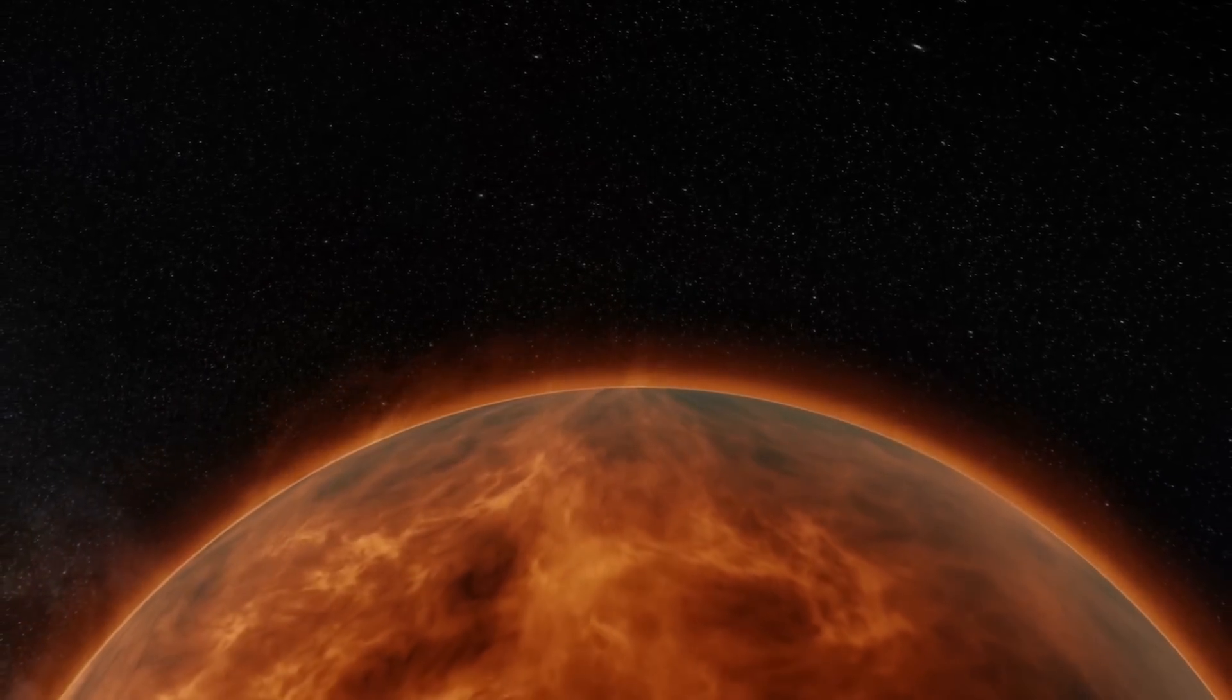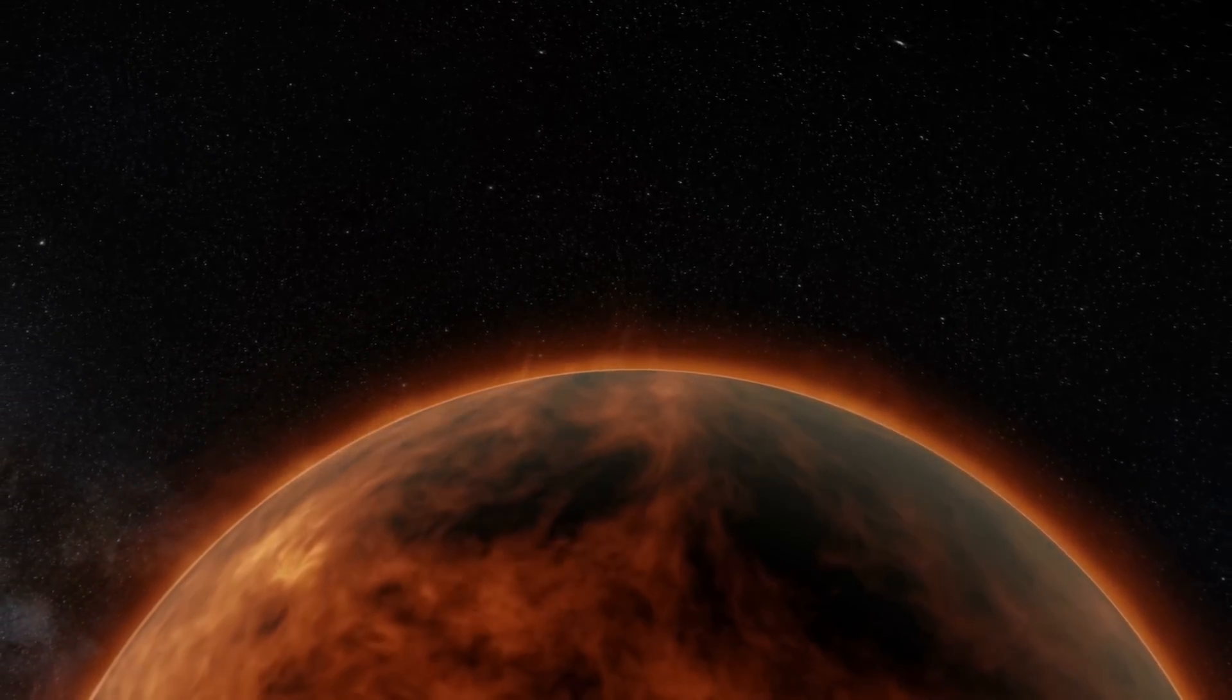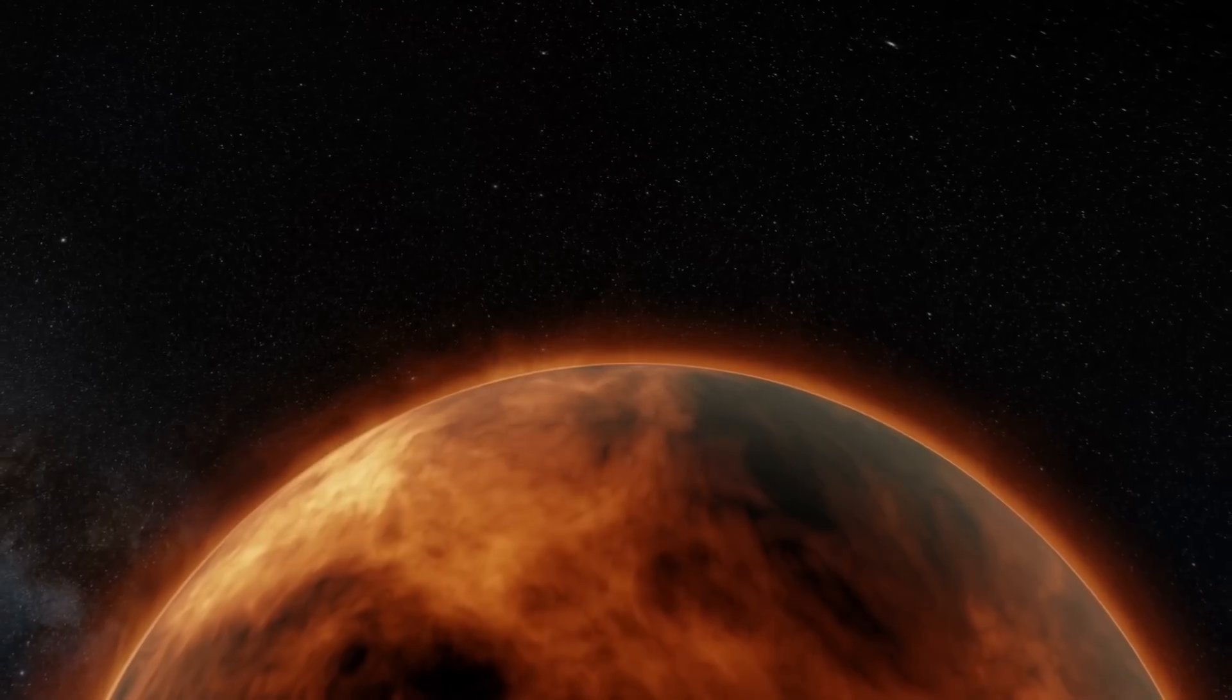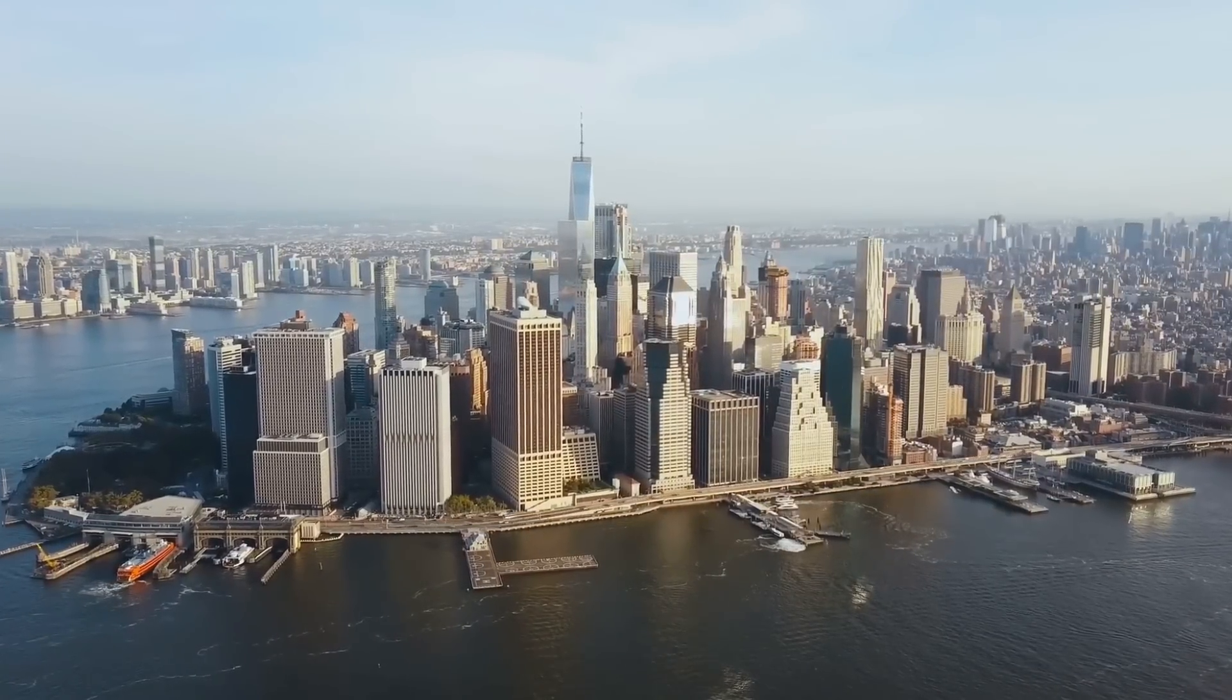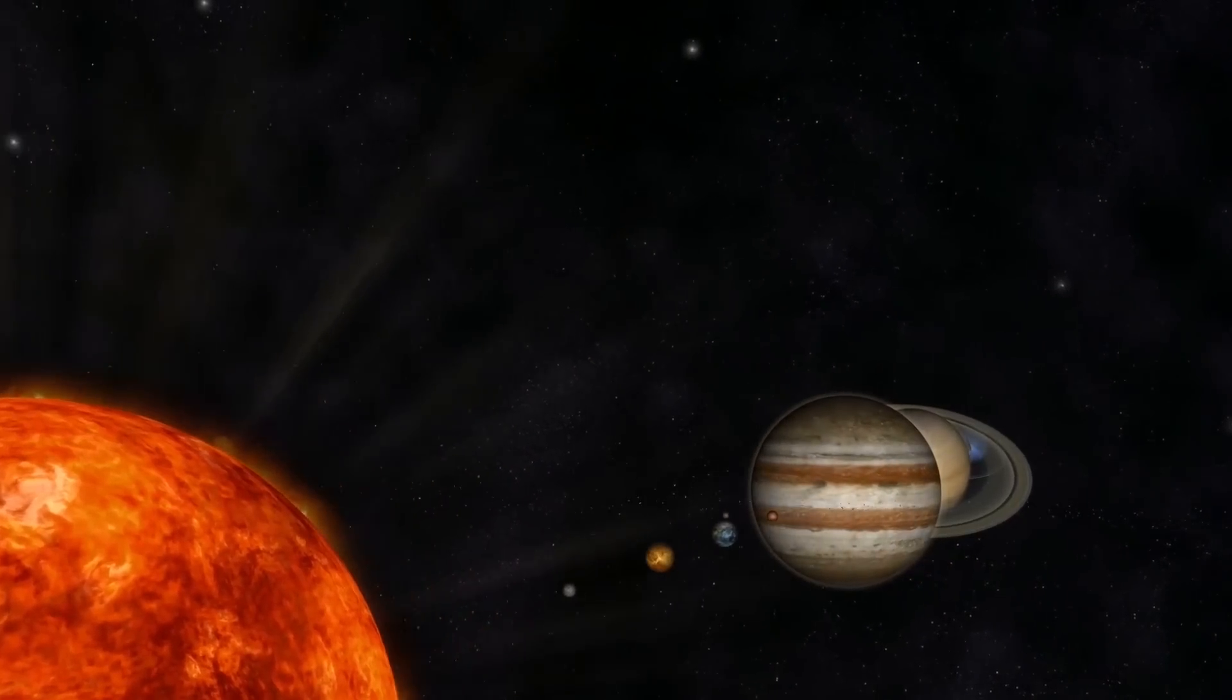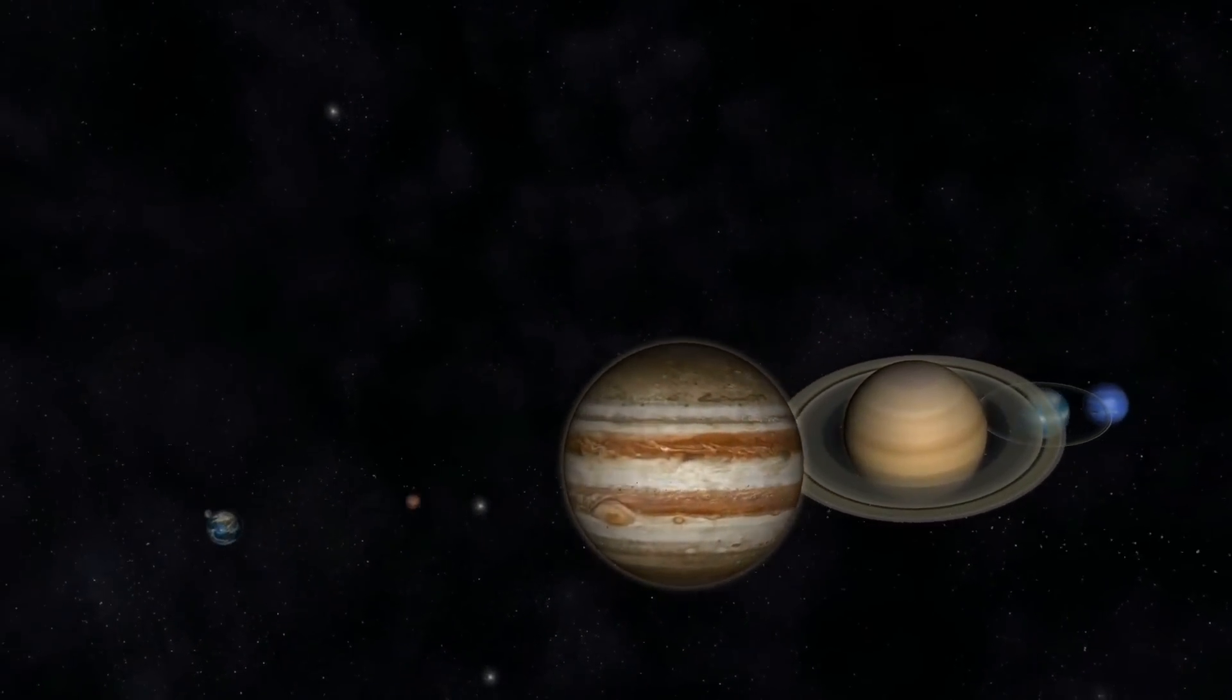The closest star to Earth is Proxima Centauri. It's about 4.25 light-years away, or about 25 trillion miles. The fastest-ever spacecraft, the now-in-space Parker Solar Probe, will reach a top speed of 450,000 miles per hour. It would take just 20 seconds to go from Los Angeles to New York City at that speed, but it would take the solar probe about 6,633 years to reach Earth's nearest neighboring solar system.